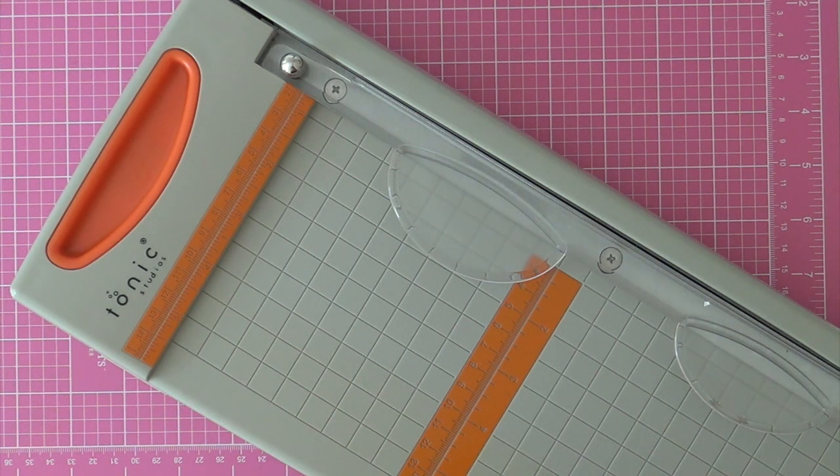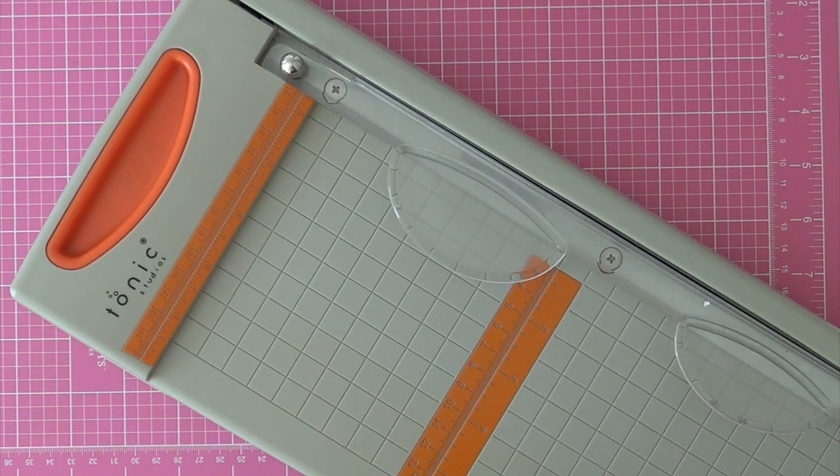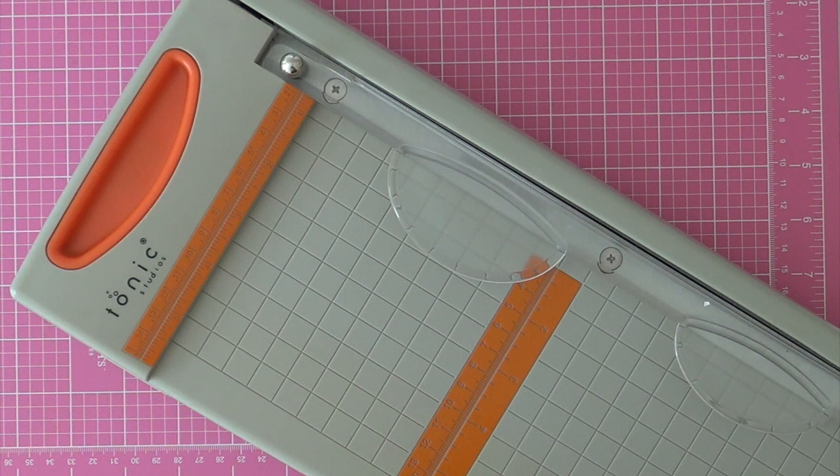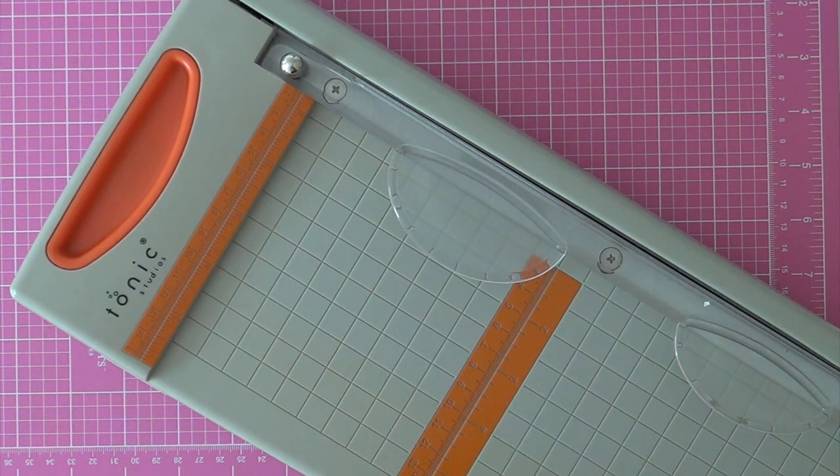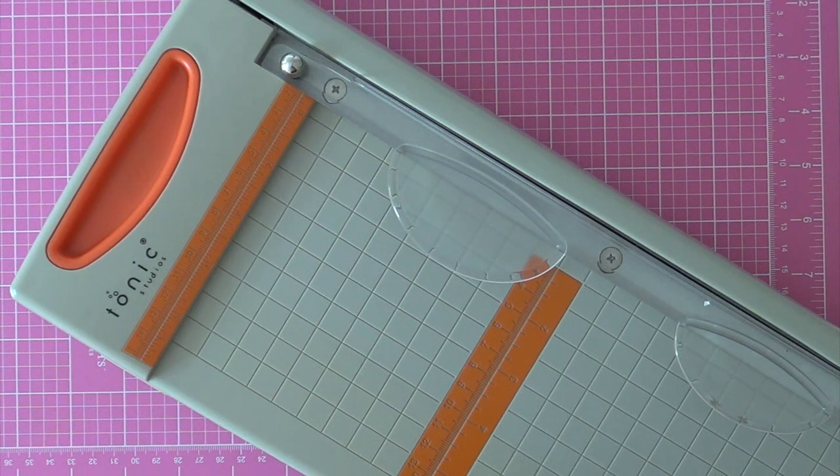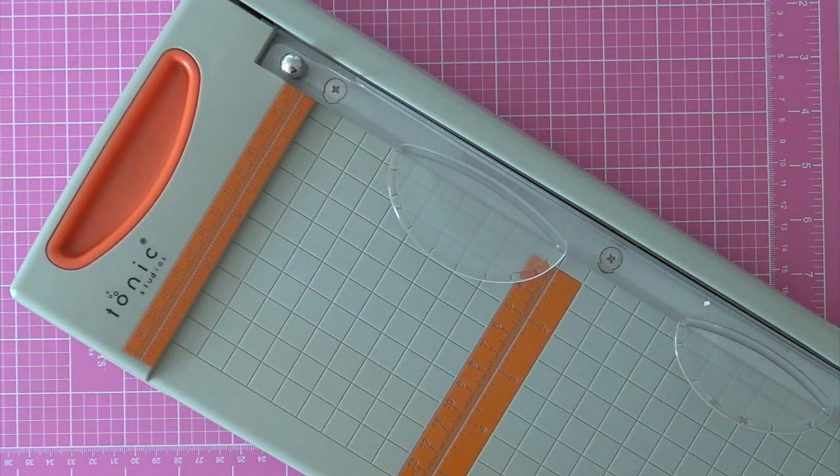So a while ago, I asked you for paper cutter recommendations since I was using my Fiskars shortcut machine, but I was no longer happy with it because I was always left with fuzzy edges and I was just so tired of that. I had to replace the blade over and over again. I probably had to replace my blade every month or so.